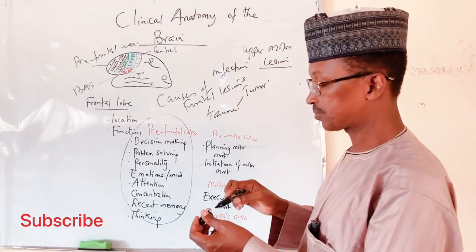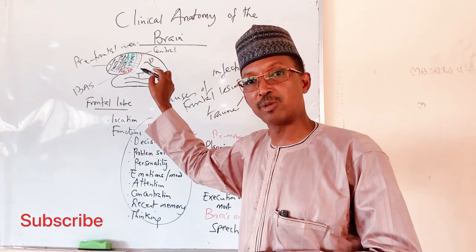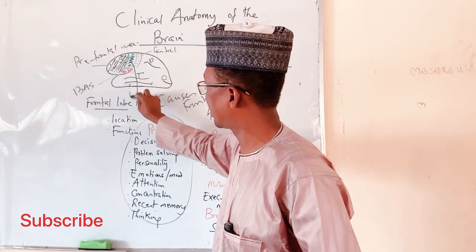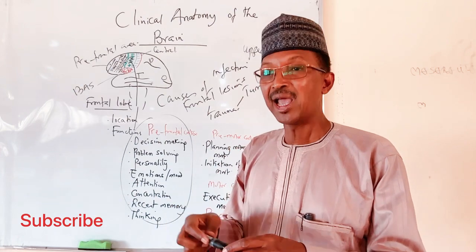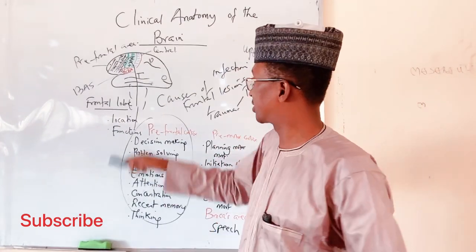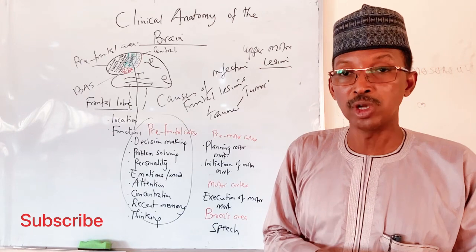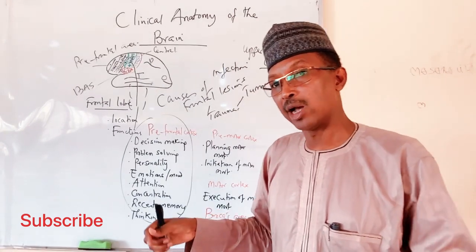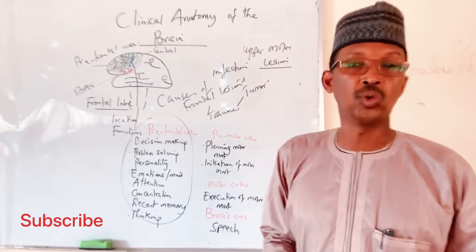Upper motor neuron lesion results from damage to the neurons of the cerebral cortex. The cell body axons pass down through the brainstem and descend into the spinal cord, finally synapsing with the anterior horn cells, which form the second neuron going to the muscles of the body. Damage to these cortical neurons constitutes an upper motor neuron lesion. The next lecture will cover upper motor neuron lesion combined with lower motor neuron lesion to appreciate the differences between the two.